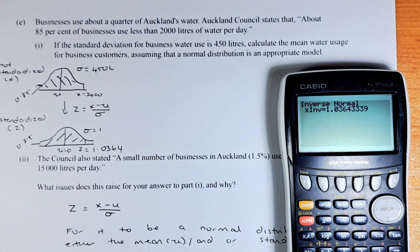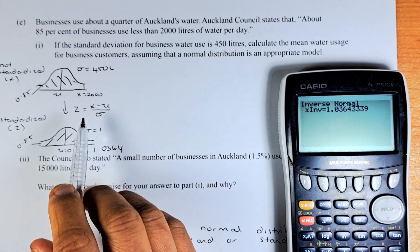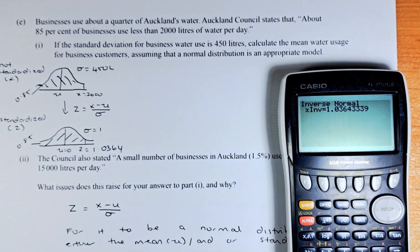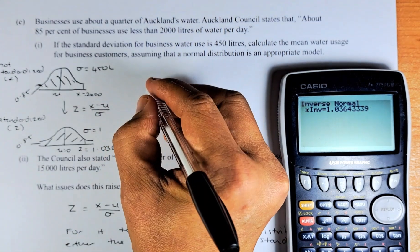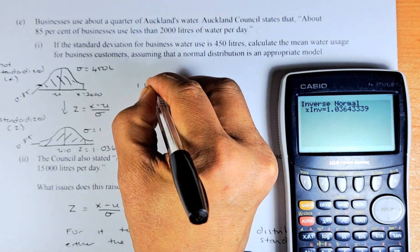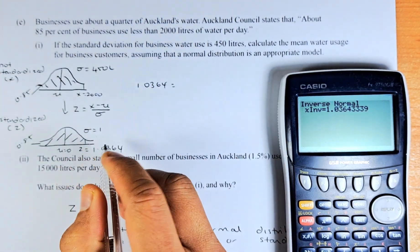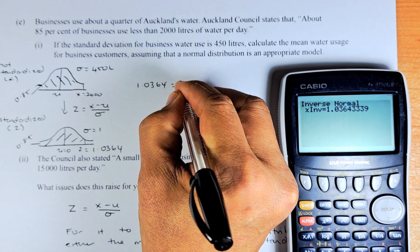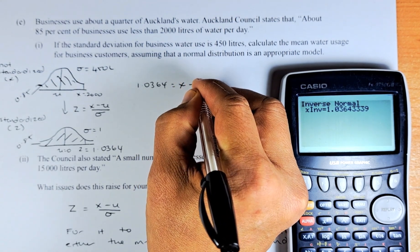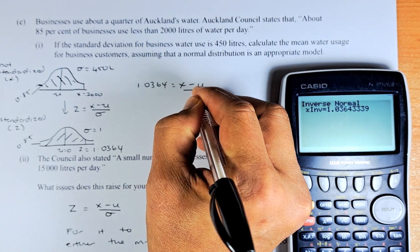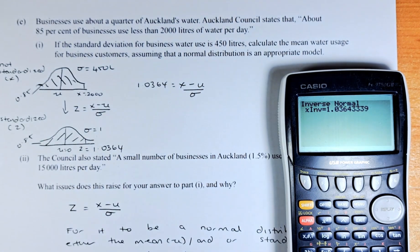So once we have done that, we need to transfer that number into this equation. So Z equals X minus nu over sigma. Now we're going to put in the values.